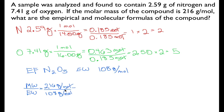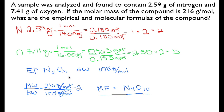If we divide the molecular weight by the empirical weight — 216 divided by 108 — our units cancel and we're left with 2. That tells us there are 2 empirical formula units in the molecular formula. So we multiply N₂O₅ by 2 to get the molecular formula N₄O₁₀. We have our molecular formula, our empirical formula, and we got the molecular formula by comparing the molecular weight to the empirical weight.